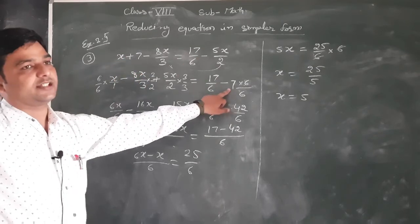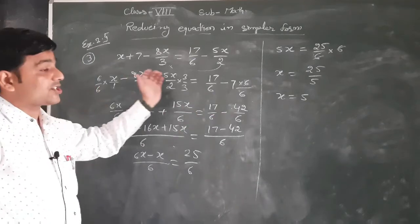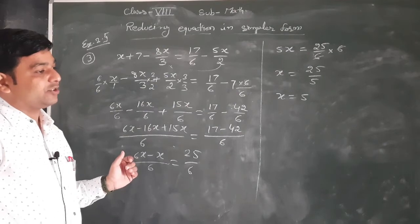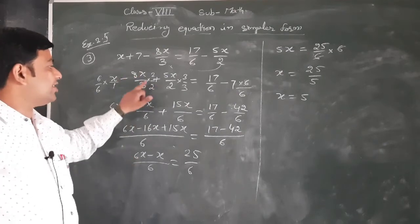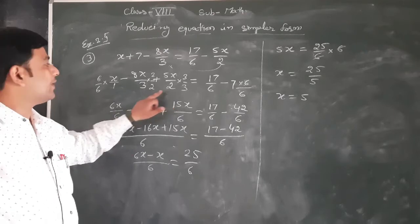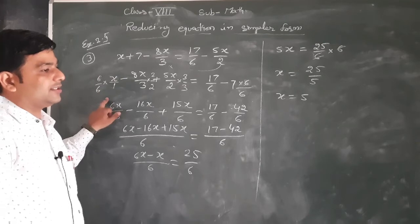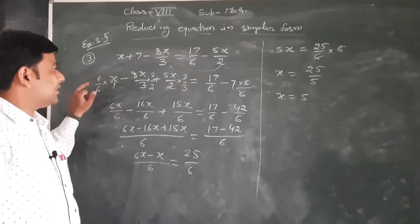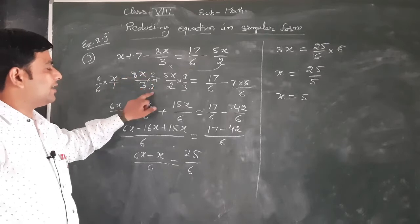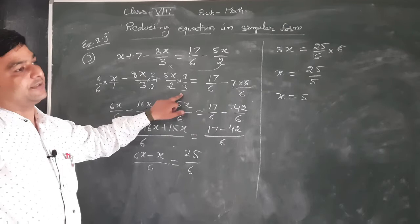Plus 7 को transpose करने पर minus 7 हो जाएगा। किसी भी fractional term को add या subtract करने के लिए denominator same होना चाहिए। यहाँ 3 और 2 हैं — denominator same बनाने के लिए LCM 6 चाहिए। x के नीचे 1 है, इसलिए 6 से multiply-divide करेंगे। इसको 2 से multiply-divide और इसको 3 से multiply-divide करके denominator same करेंगे।